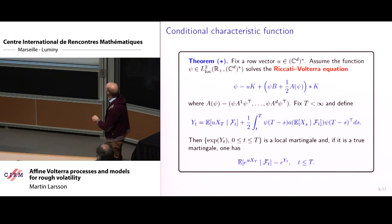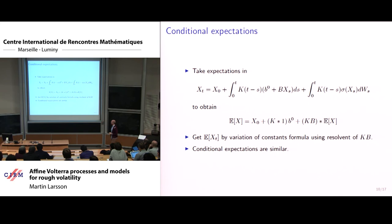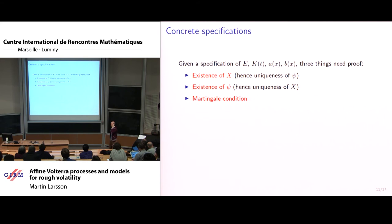So here is one result which basically shows that this representation that I showed a couple of slides back is indeed the one that generalizes. What we do is we assume that we have our process X. We assume that we have a solution Psi to a convolution equation. This is a quadratic convolution equation because A of Psi is a vector which depends quadratically on the unknown function Psi. So this is a quadratic integral equation which we refer to as the Riccati-Volterra equation. And if we define a process Y through this expression, then e to the Y is a local martingale. And if it is a martingale, then we have the conditional characteristic function that we want.